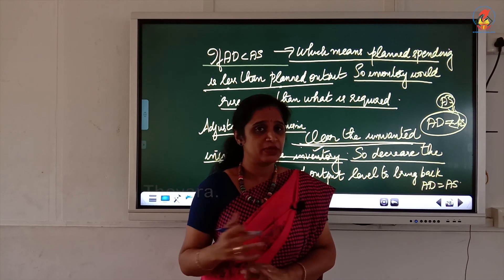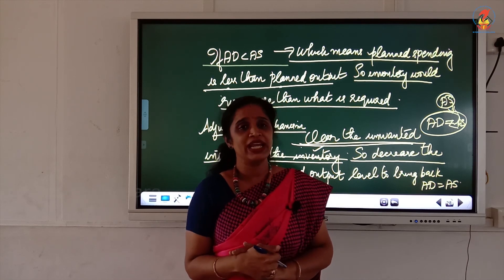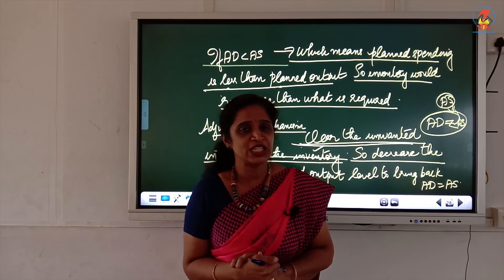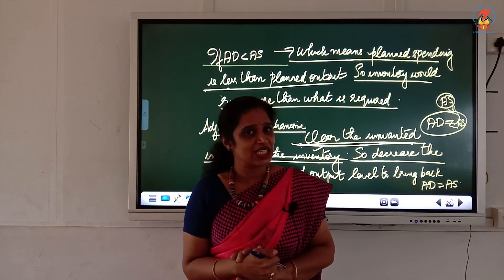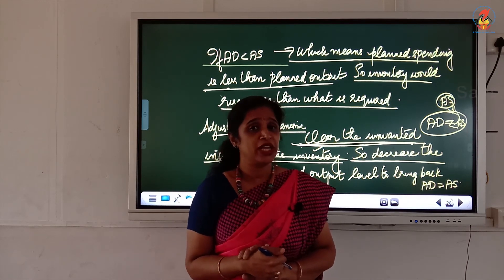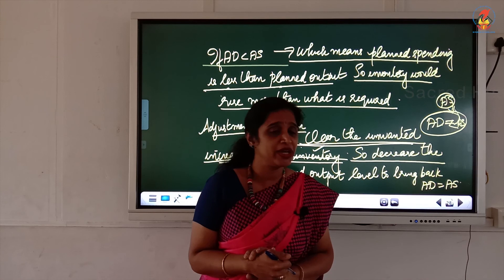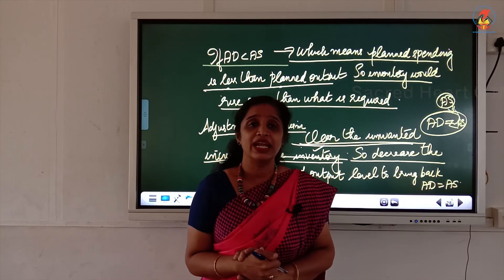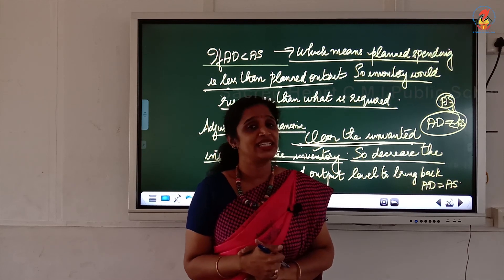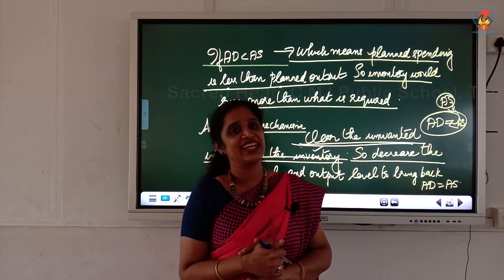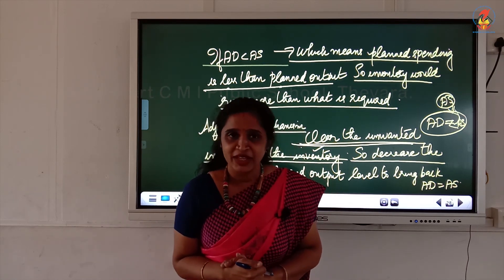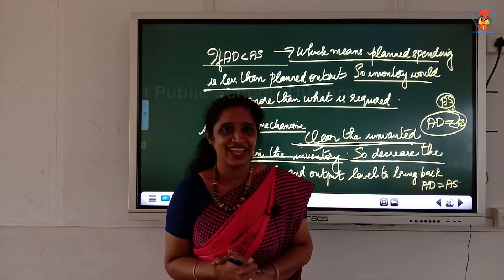Such adjustment mechanisms work in the economy to bring back the equilibrium situation. In summary, the equilibrium level of income and employment is achieved where AD equals AS. If either AD is greater than AS or AD is less than AS, the adjustment mechanism works so that finally AD becomes equal to AS. Thank you.